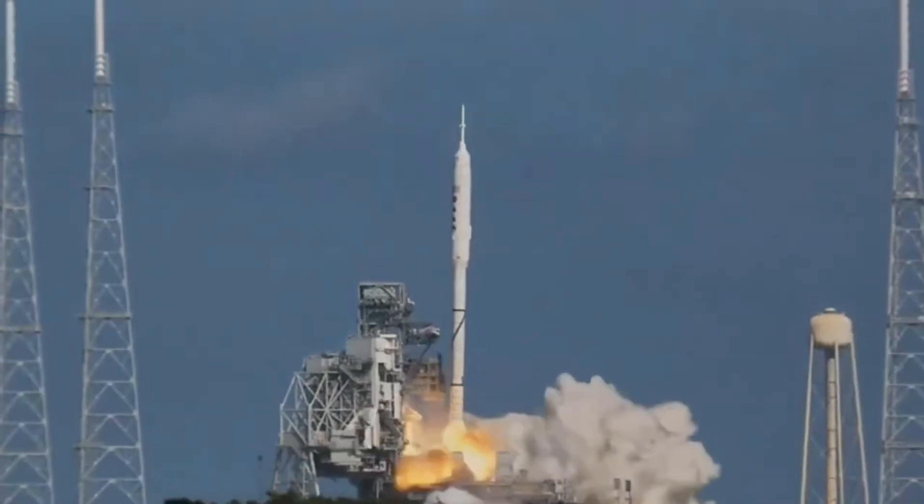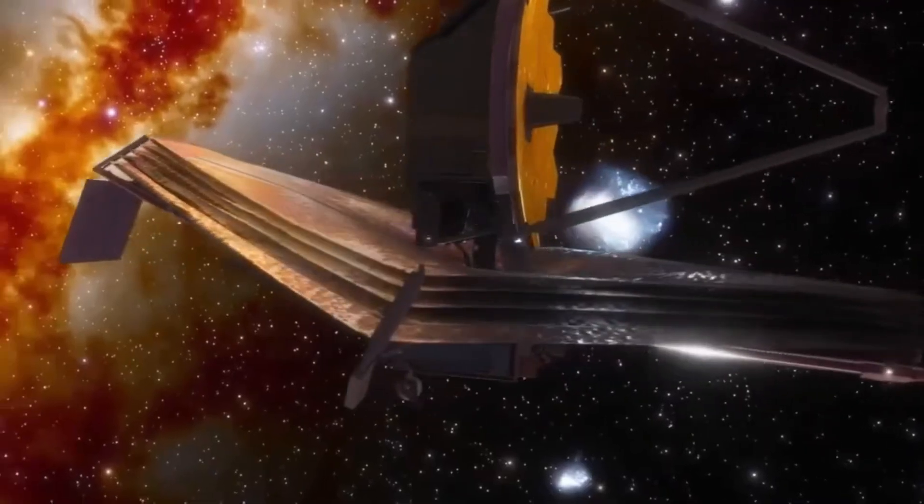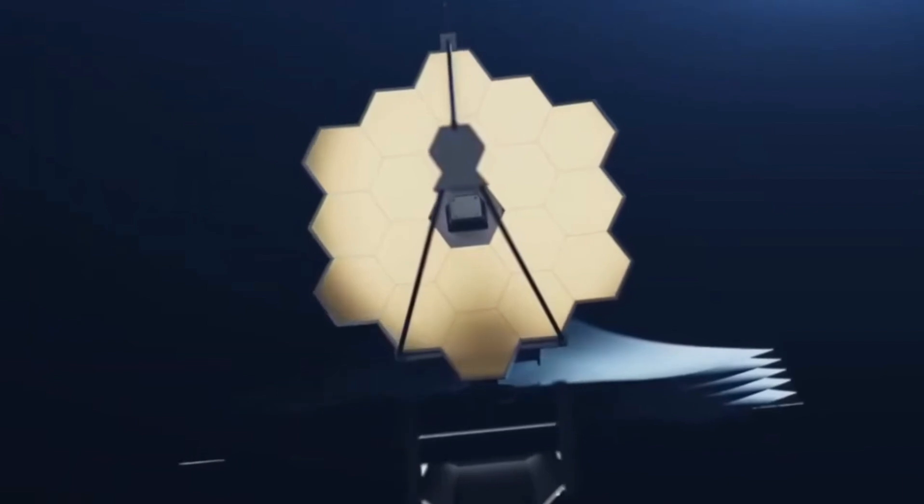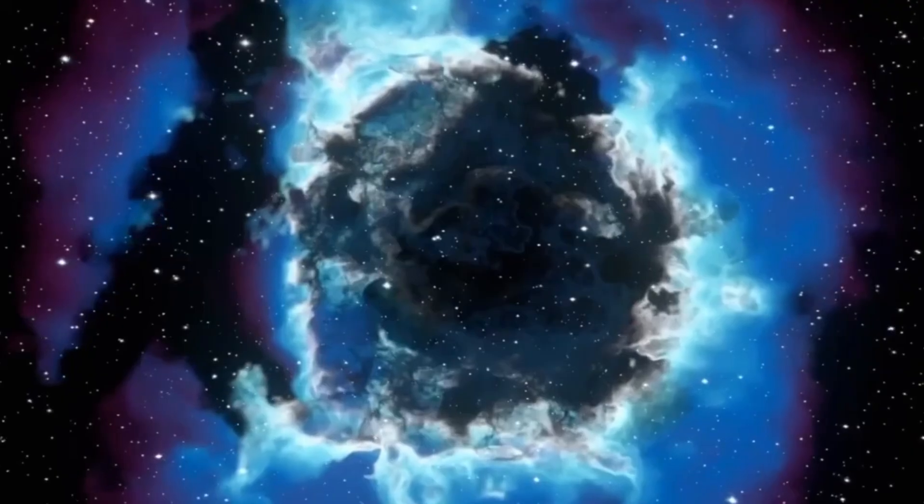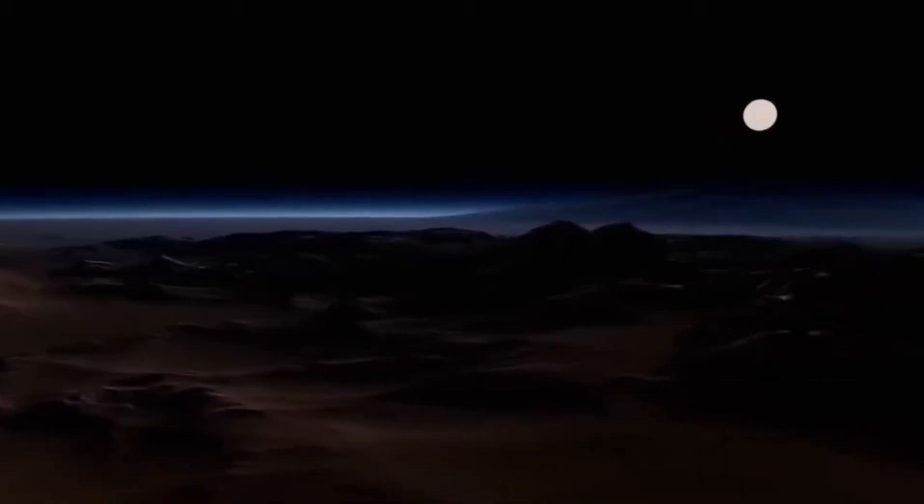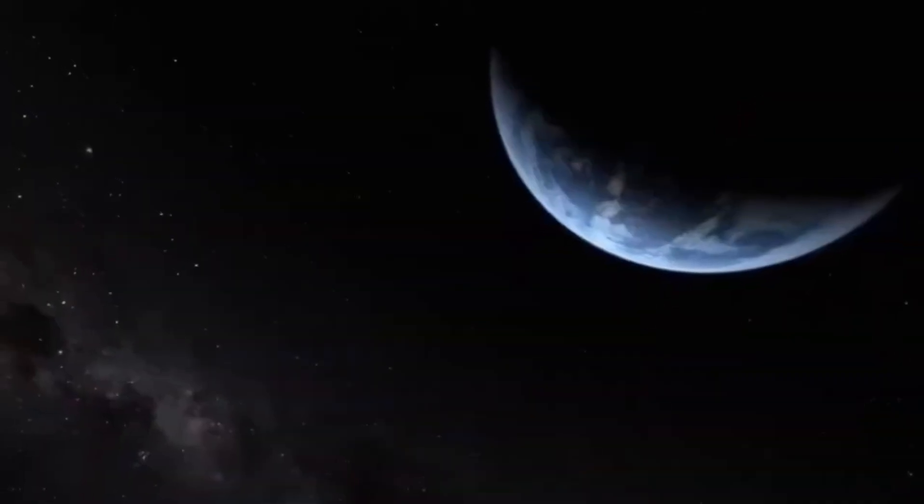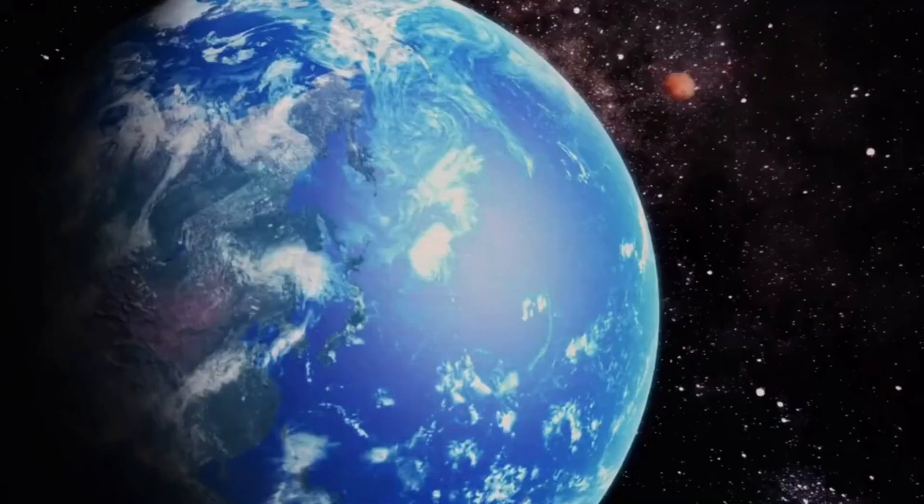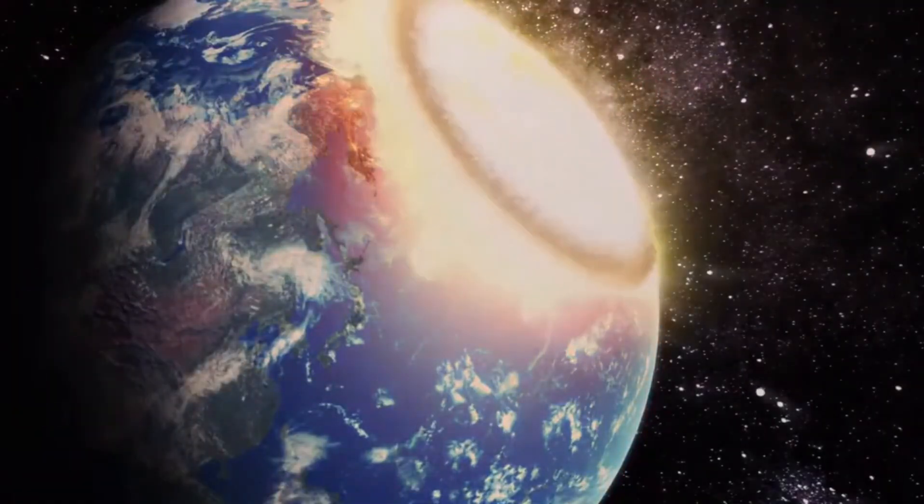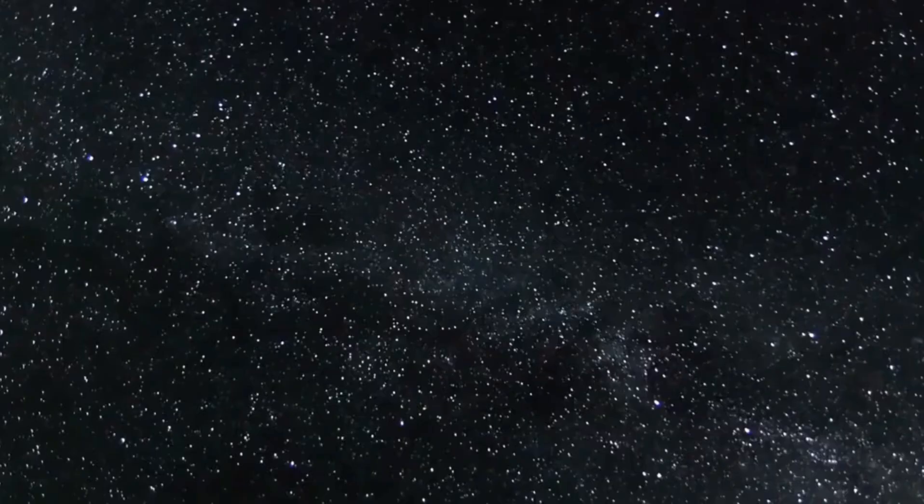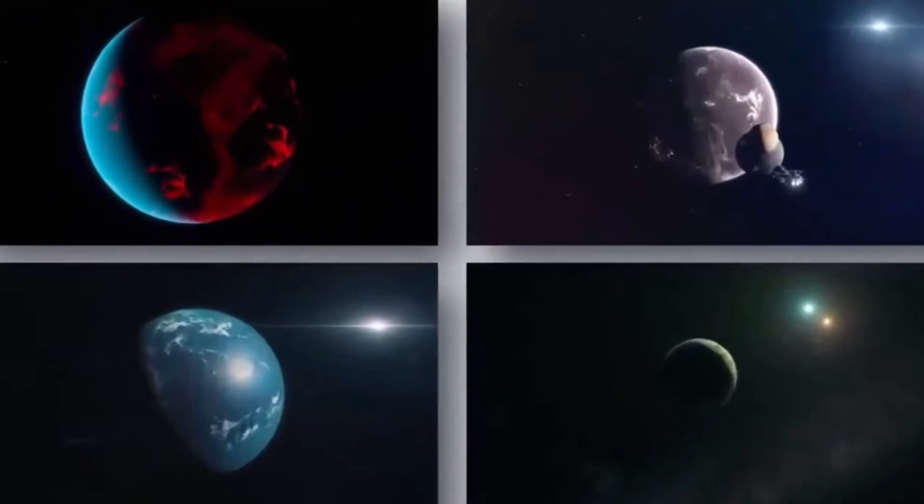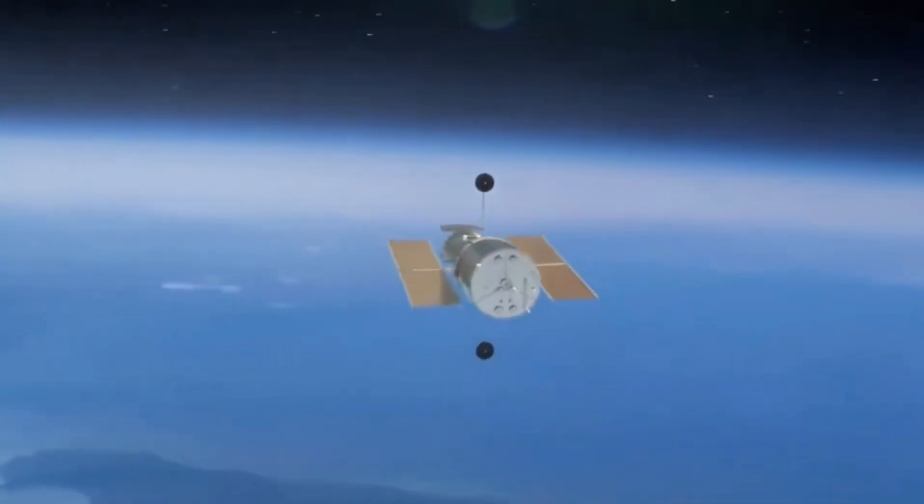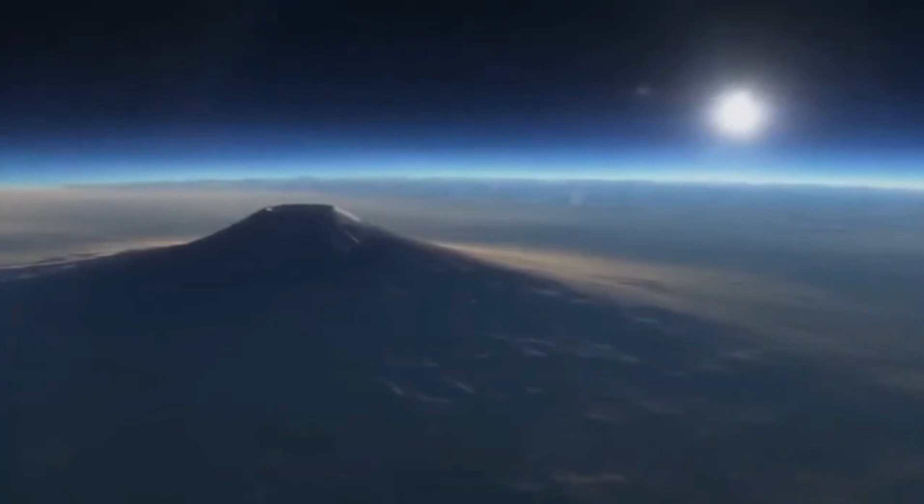The nearest habitable exoplanet is Proxima Centauri b at a distance of 4.25 light-years. Given its closeness to its host star, the planet is likely tidally locked, facing the star with a permanent day side. How likely is it that Proxima b may support life? That intriguing subject keeps popping up. Harvard University physicist Avilobe and astronomer Laura Kraidberg propose using the JWST to discover solutions. Scientists can use the JWST to study patterns that suggest the existence of water or an atmosphere on Proxima b because it can capture infrared light reflected off the surface.